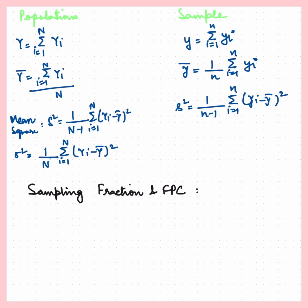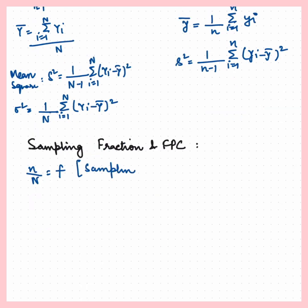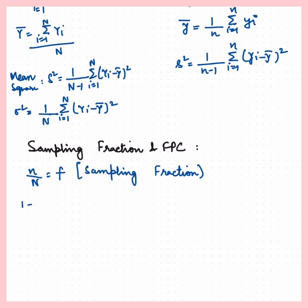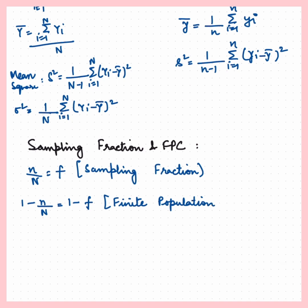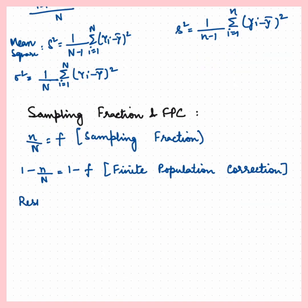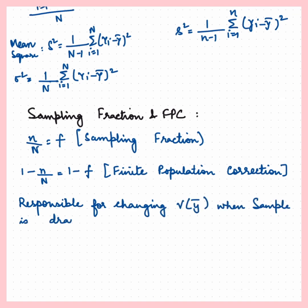Now we will understand what is sampling fraction and FPC. Small n upon capital N is represented as f, which is the sampling fraction, and (1 − n/N) is the finite population correction (FPC). FPC is responsible for changing the variance of y-bar when a sample is drawn from a finite population in comparison to an infinite population.